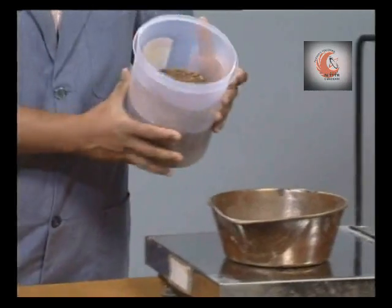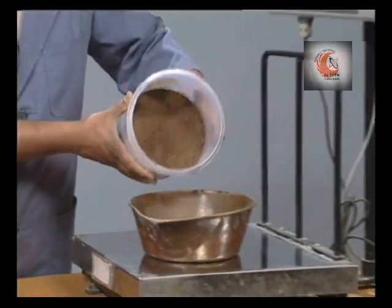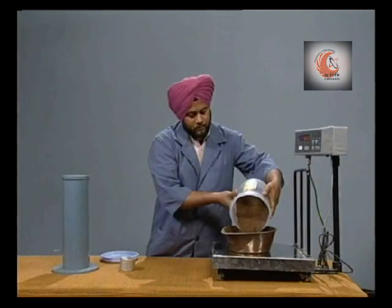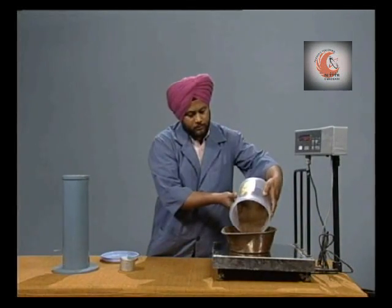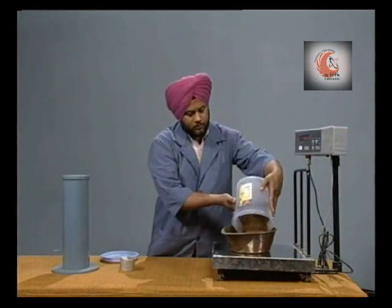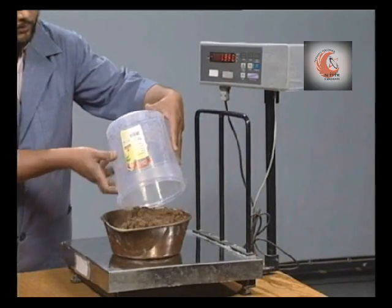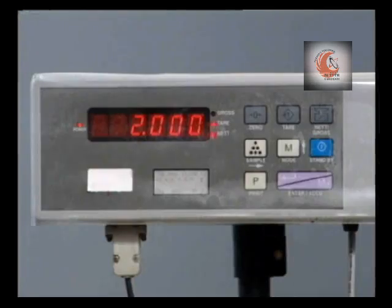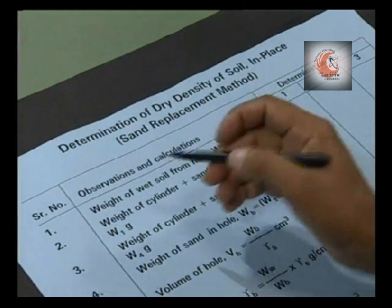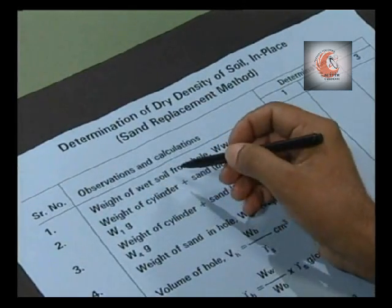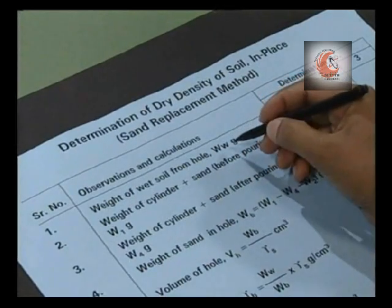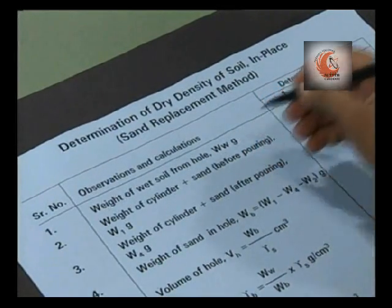Weigh the soil and record the value in the pro forma. Record the weight of wet soil from the hole, that is WW.